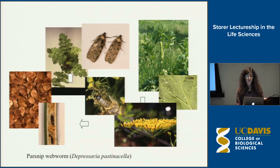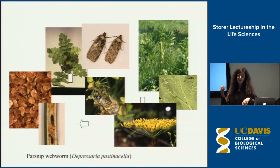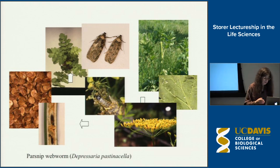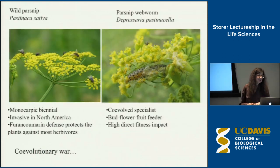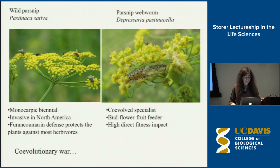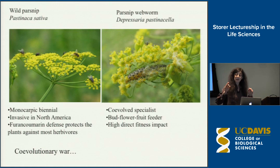After a couple of weeks, when the parsnip webworms are ready to pupate, they tunnel into the stem, form a silken cocoon, pupate, and then just as the seeds in the umbel mature, the webworms emerge as moths. Both species spend about 10 months of the year waiting for the next season. It's a biennial plant and a univoltine insect — a plant with very few other enemies and an insect with very few other hosts.